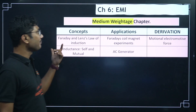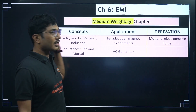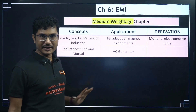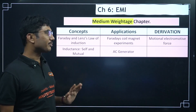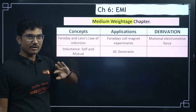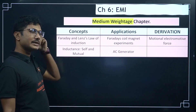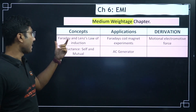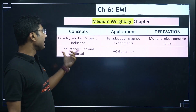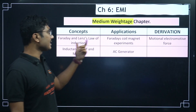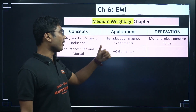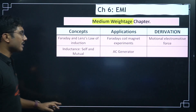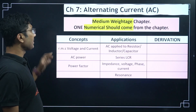EMI (Electromagnetic Induction) is a medium-weighted chapter and not a super difficult one. Five-marker questions — neither derivation nor numerical — will generally not come from this chapter, but concept questions will. Important topics: Faraday's and Lenz's law of induction, inductance, self and mutual inductance, Faraday's coil-magnet experiment, AC generator, and motional electromotive force.